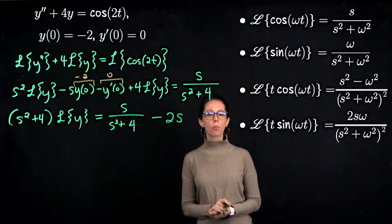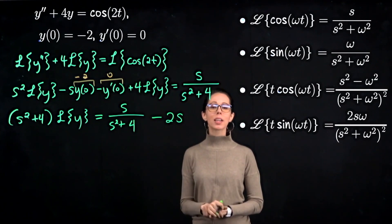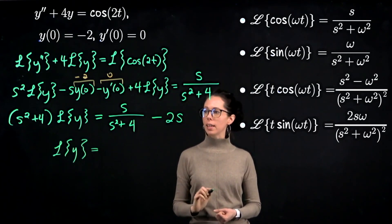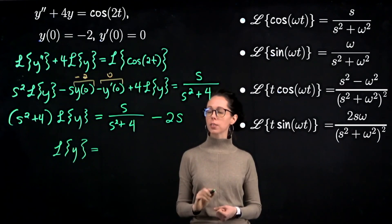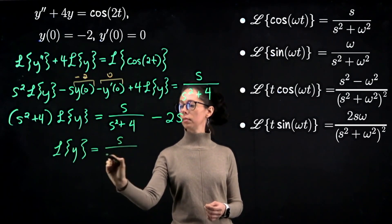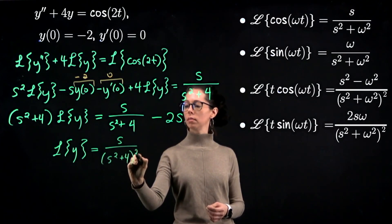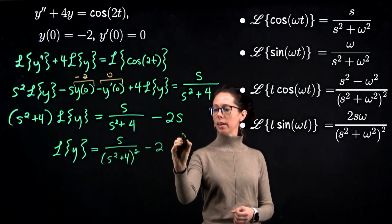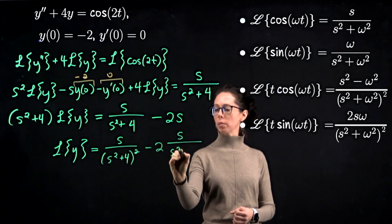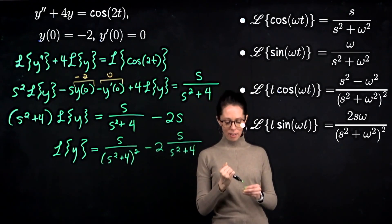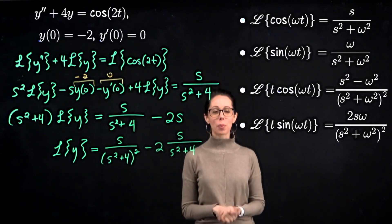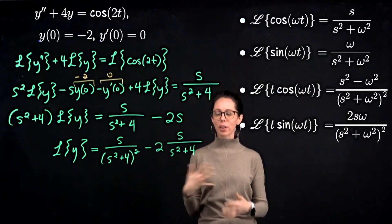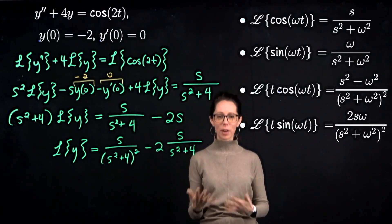Isolating the Laplace transform of y, we get s divided by s squared plus 4, that quantity squared, minus 2 times s divided by s squared plus 4. Take a moment to recognize what each piece is — both are versions of cosine, sine, t cosine, or t sine for the right choice of omega.